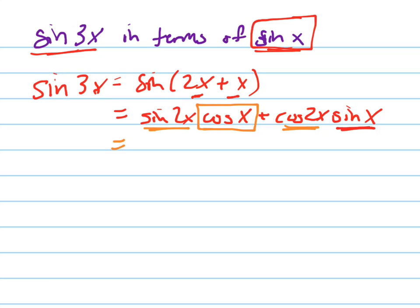The sine of 2x, now I'm using the double angle formula, is equal to, oh look at this, 2 sine of x, cosine of x, that's what that equaled right there,